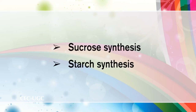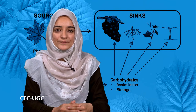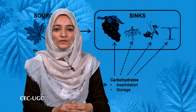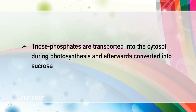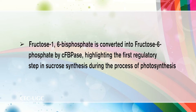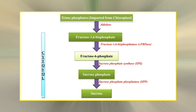The two processes — sucrose synthesis and starch synthesis — occur in a highly coordinated fashion in source leaves. Triose phosphates are transported into the cytosol during photosynthesis and converted into sucrose. Fructose-1,6-bisphosphate is converted into fructose-6-phosphate by cytosolic fructose bisphosphatase, representing the first regulatory step in sucrose synthesis. The second committed step is catalyzed by SPS (sucrose phosphate synthase), wherein sucrose-6-phosphate is formed from UDP-glucose and fructose-6-phosphate.